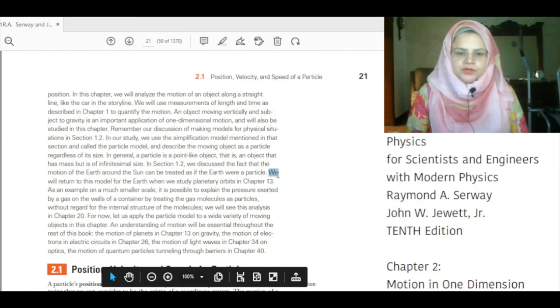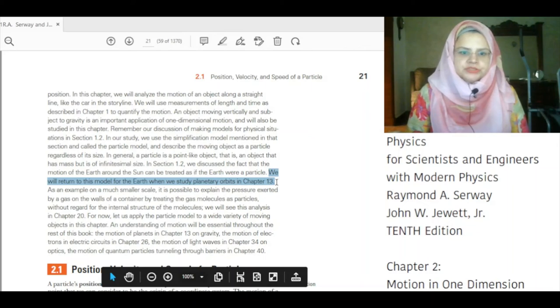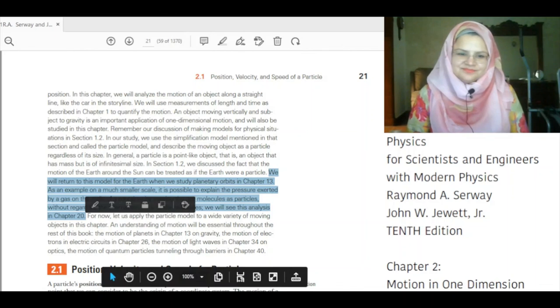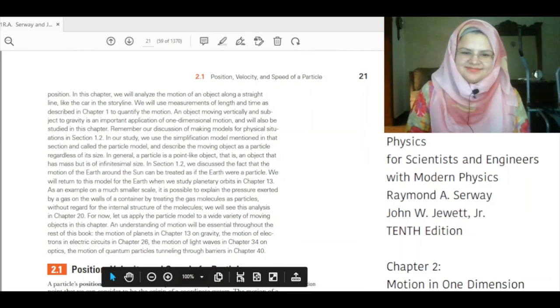We will return to this model for the earth when we study planetary orbits in chapter 13. As an example, on much smaller scale, it is possible to explain the pressure exerted by a gas on the walls of the container by treating the gas molecules as particles without regard for the internal structure of the molecules.